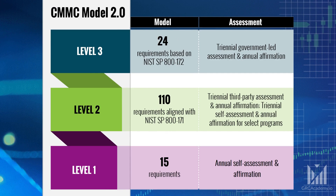Level 1 is required for contracts that only handle federal contract information. It has 15 security requirements or security controls based on FAR 52.204-21's basic safeguarding requirements. Level 2 is required for contracts that handle controlled unclassified information and has 110 requirements from NIST 800-171, revision 2. Level 2 requires a third-party assessment for most level 2 contracts, though a small subset will allow the contractor to self-assess.